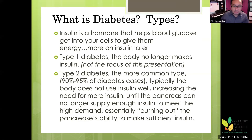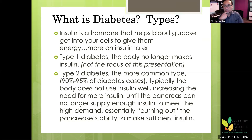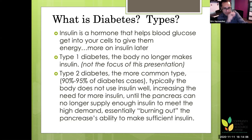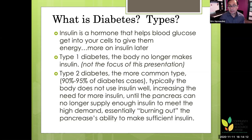Insulin is a hormone your body produces to help blood sugar enter from the blood into your cells to give your cells energy. It does other things too, but without insulin or sufficient insulin, blood sugar would be high.